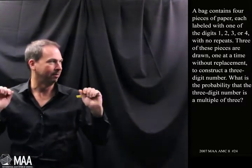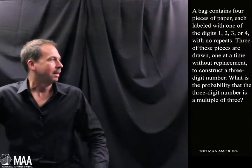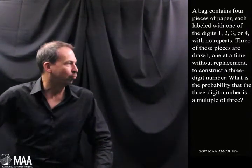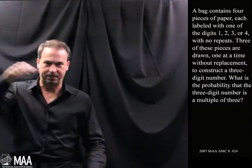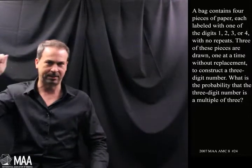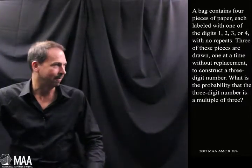Four pieces of paper, digit number 1, number 2, number 3, number 4, on these pieces of paper. Three of these pieces are drawn one at a time without replacement to construct a three-digit number. So this is a bag, pull out a piece, pull out a piece, and pull out a piece, one at a time. That makes a three-digit number.